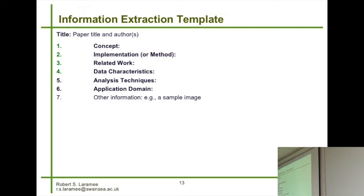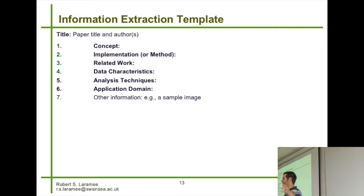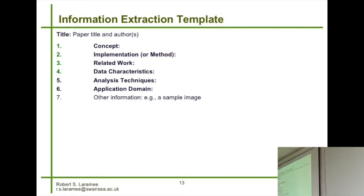When doing your literature survey, you can apply a template to each paper and write a one-paragraph summary. The information extraction template includes: a paper title, the concept in one or two sentences, the implementation in one or two sentences, the most important related work in maybe two sentences, data characteristics and analysis techniques (optional), an application domain, and maybe a sample image. That's how you summarize a research paper systematically and navigate through thousands of previously published papers.